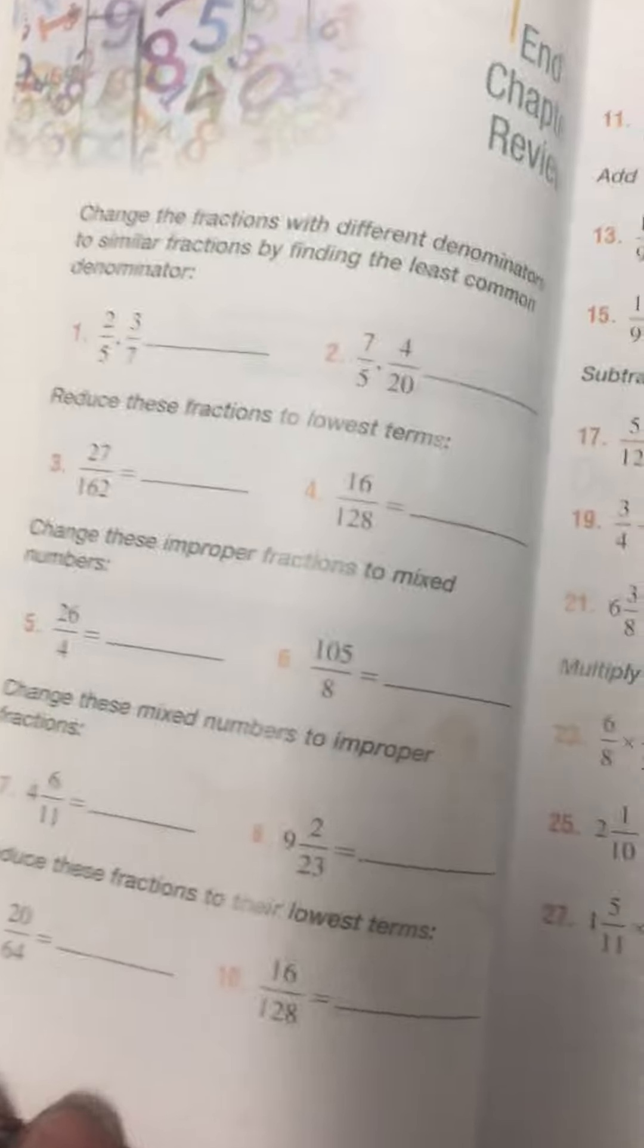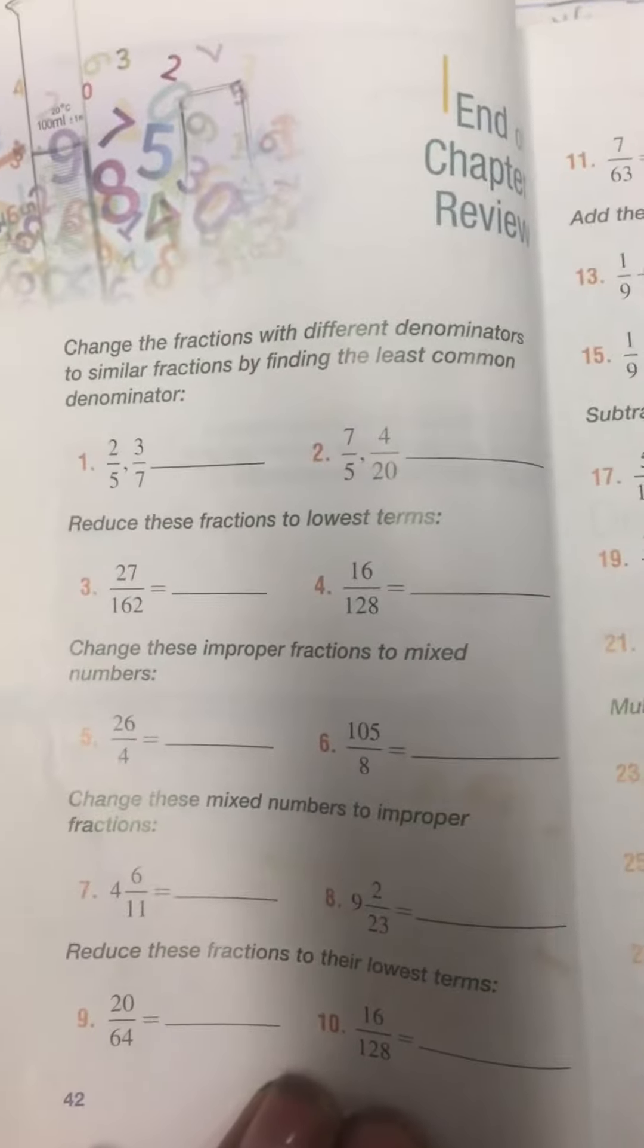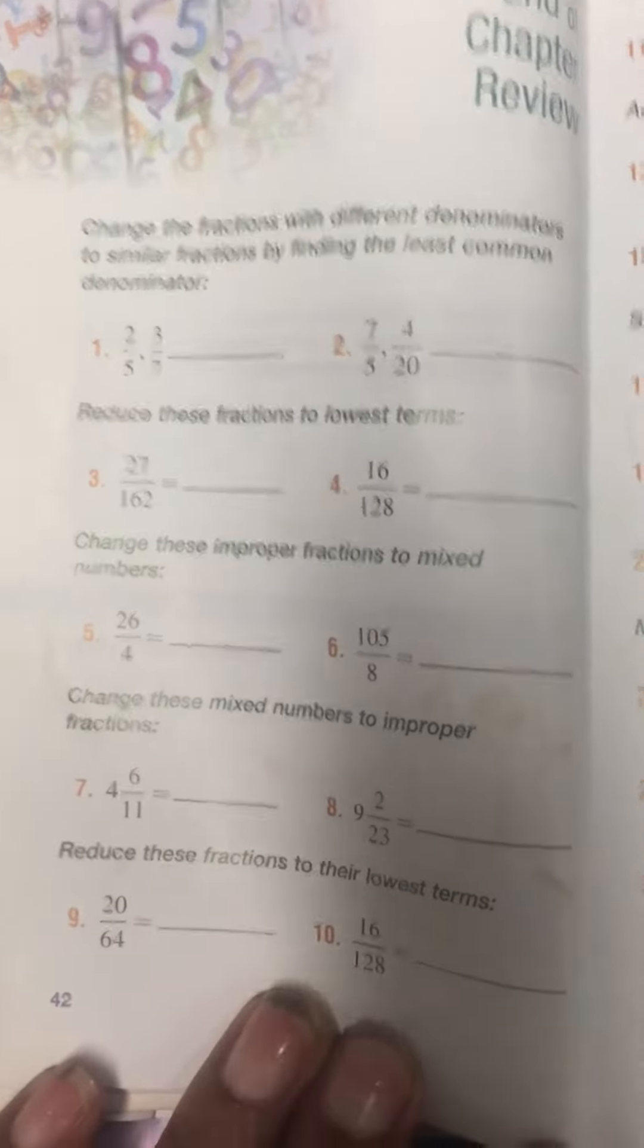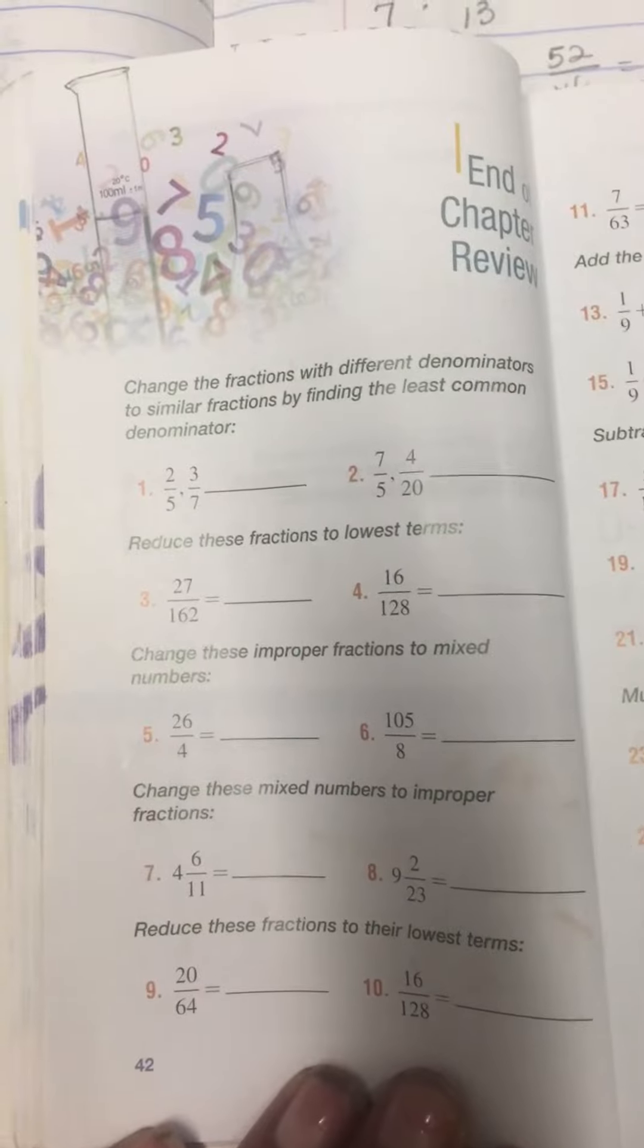All right students, page 42 and 43, which is the end of the chapter review. We went over these in class yesterday if you were in a Thursday class. It says change the fractions with different denominators to similar fractions by finding the common denominator.